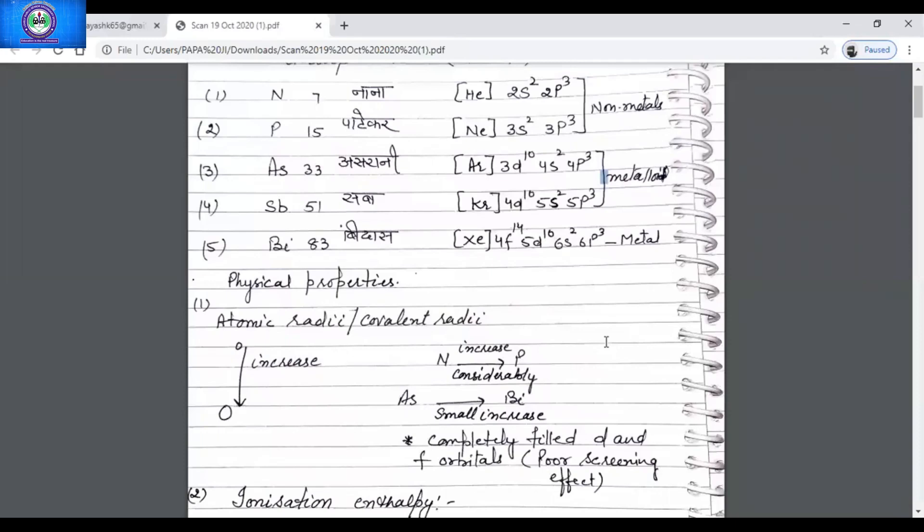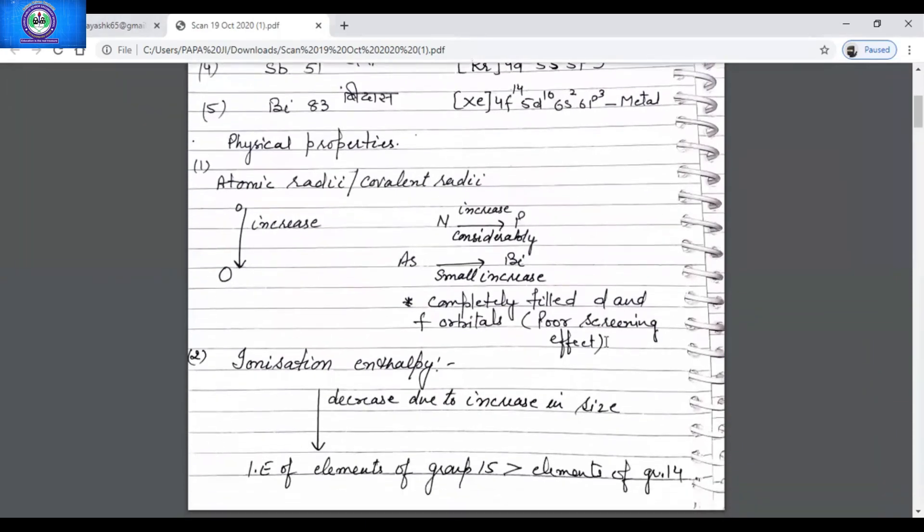Then is ionization enthalpy. Ionization enthalpy in general decreases down the group. Why? Because of the increase in size. The ionization enthalpy increases along the period and decreases down the group. In general, the increase in ionization enthalpy in a period is because of the decrease in atomic size and increase in effective nuclear charge.